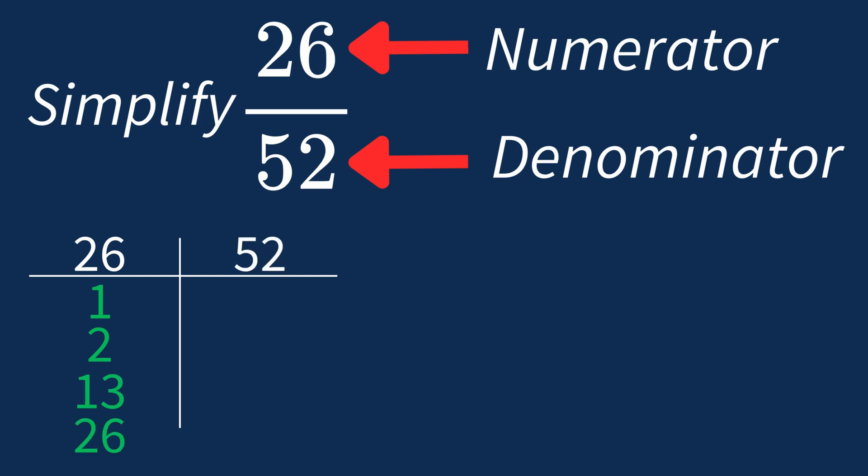For 52, the factors are 1, 2, 4, 13, 26, and 52.